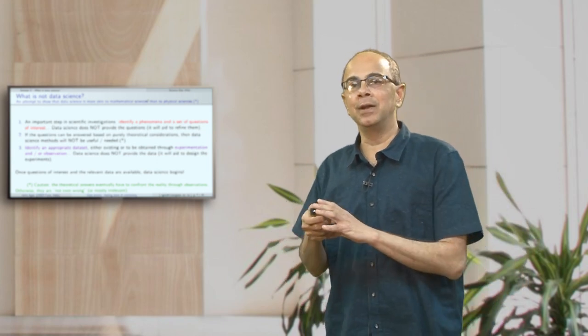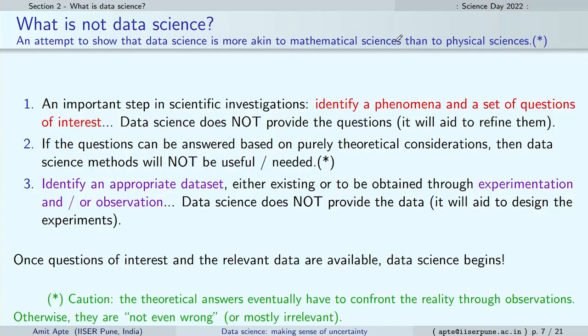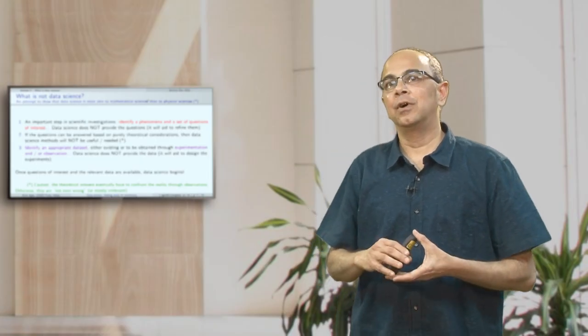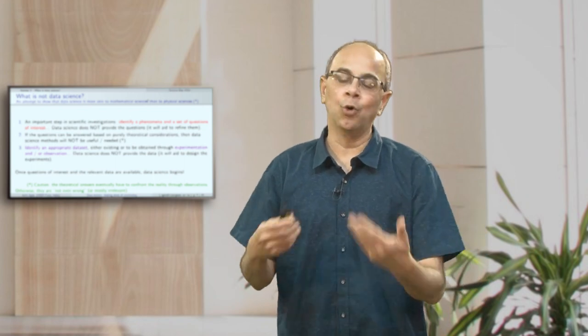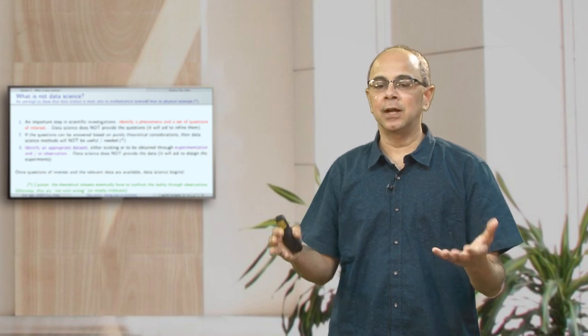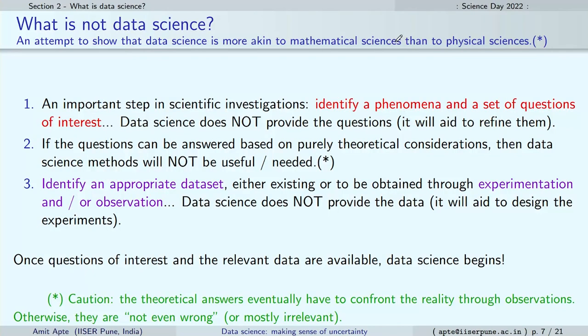Once you have a question in mind, if you have sufficient theoretical background to answer it, you may not necessarily need to capture observations from the world — you may be able to answer some questions purely based on theoretical considerations, and data science may not be very useful there. But if the phenomenon requires observations, you start collecting the appropriate data set, either doing experiments or taking observations of the world, and the methods of data science help you design these experiments and decide what kind of observations to take.